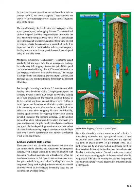Attitude and sink rate control: The most critical and often most inexcusable error in planning and executing an emergency landing, even in ideal terrain, is the loss of initiative over the aircraft's attitude and sink rate at touchdown. When the touchdown is made on flat open terrain, an excessive nose-low pitch attitude brings the risk of sticking the nose in the ground. Steep bank angles just before touchdown should also be avoided, as they increase stalling speed and the likelihood of a wingtip strike. Since the aircraft's vertical component of velocity is immediately reduced to zero upon ground contact, it must be kept well under control. A touchdown at a high sink rate — in excess of 500 FPM — on a hard surface can be injurious. On soft terrain, an excessive sink rate may cause the nose wheel to dig in, with the wing rotating forward into the ground.